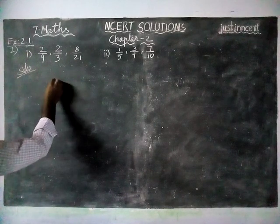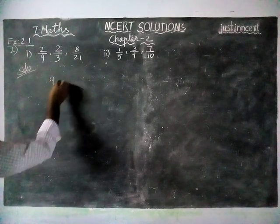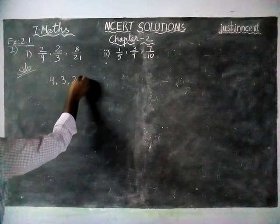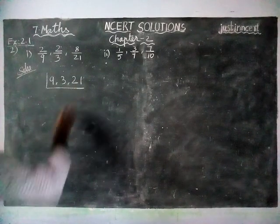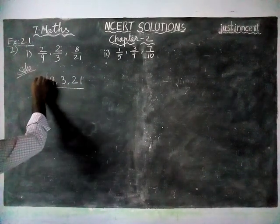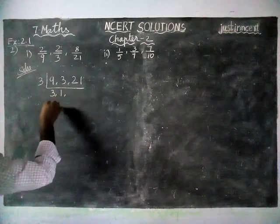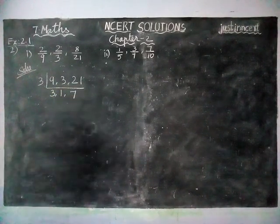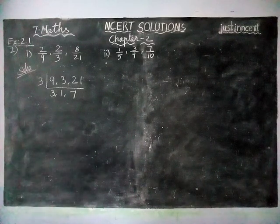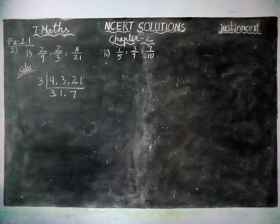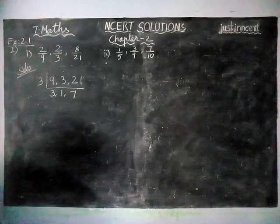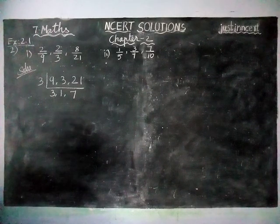First we are going to find LCM of 9, 3, 21. When we are dividing by common divisor 3, we get 3, 1, 7. Hereafter we cannot divide it by the common divisor.